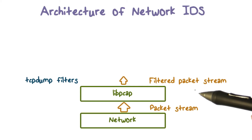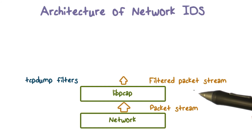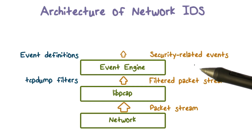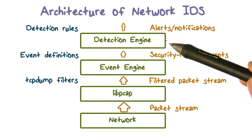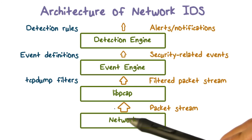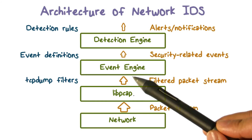First, we can apply filters to the packet data — for example, by instructing libpcap to capture only packets to certain services. Second, the event engine analyzes the filtered packet data and summarizes them into security-related events, such as failed logins. Finally, detection models are applied to the security-related event data. As we can see, the volume of data is decreased first by the packet filter and then the event engine.